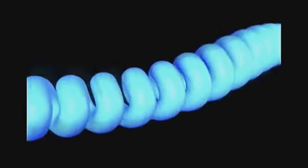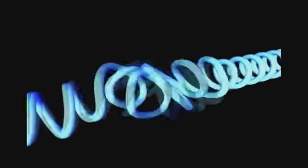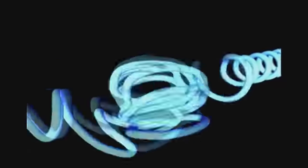This filament kinks and twists itself into a tiny dense ball, only a few thousandths of an inch across, called the plasmoid.